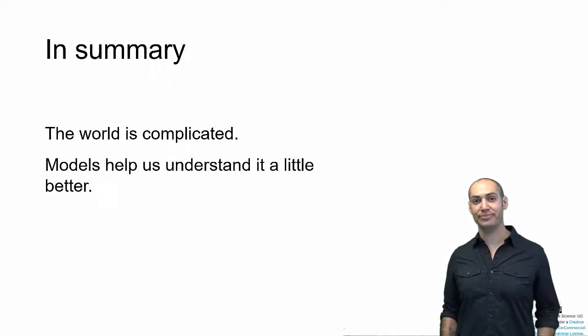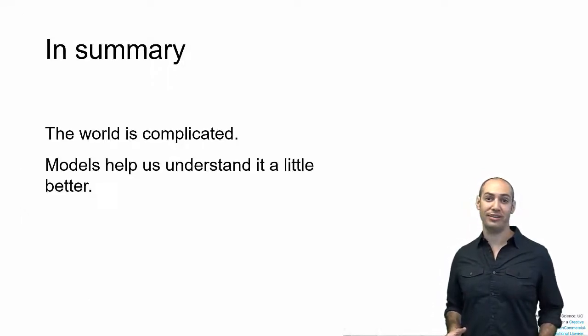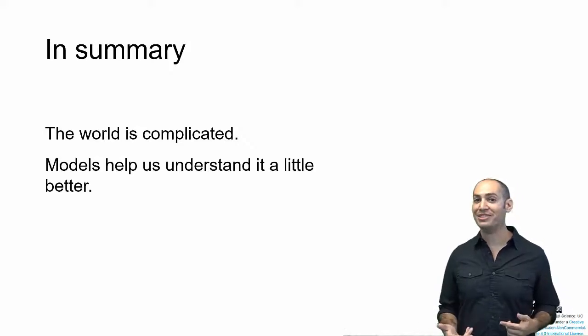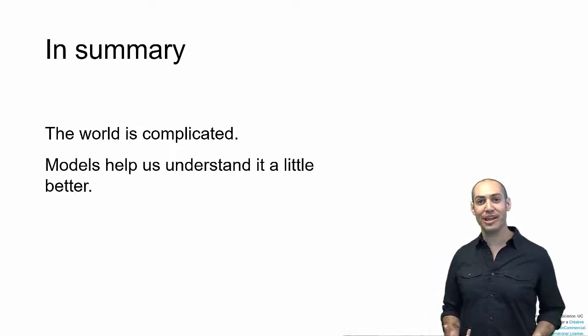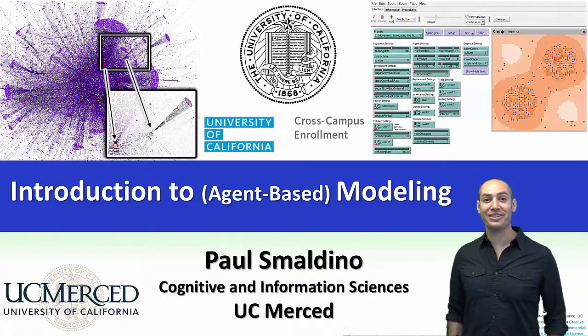So, in summary. The world is complicated. When we try to explain things, we can end up talking past each other if we're not really clear about what we're talking about. And models can help us do this. And in doing so, maybe help us explain the world a little bit better. Thank you.